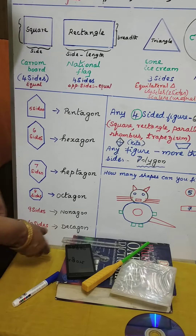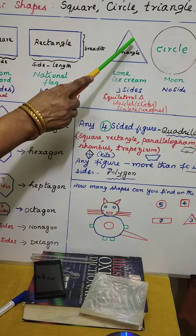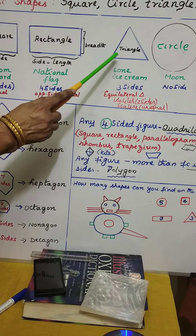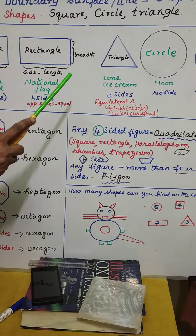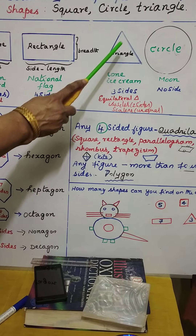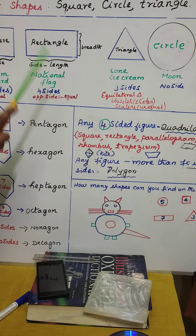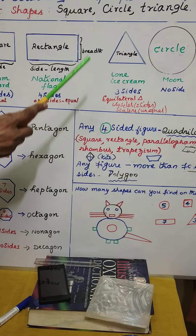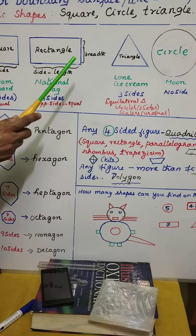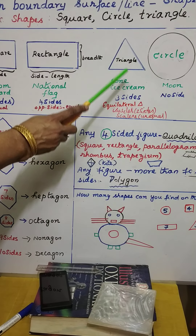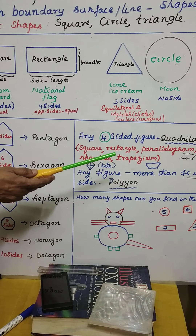Now the third shape — look at this figure. How many sides are there? One, two, three. If any figure has got three sides, it is said to be a triangle. Tri means three — a three-sided figure. You can remember a cone ice cream; looking at only the outer surface, that is an example of a triangle.